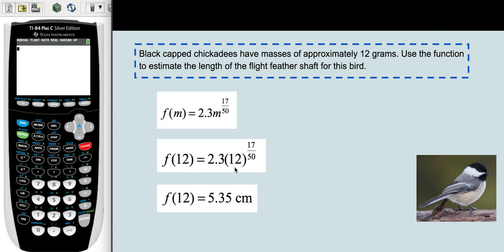So we're working on the second step on the calculator. We need to do 2.3 times 12, and that needs to be raised to the 17/50ths. We'll tell it enter, and this is rounded.